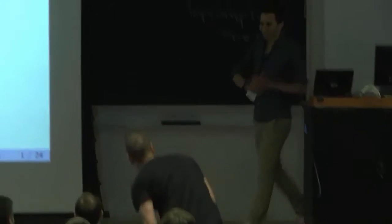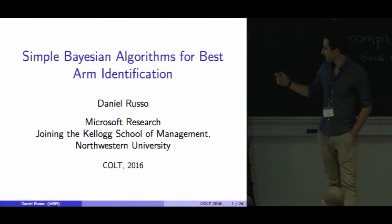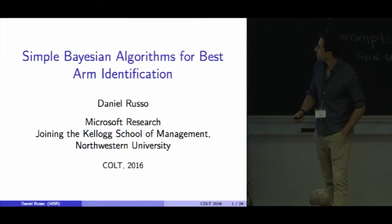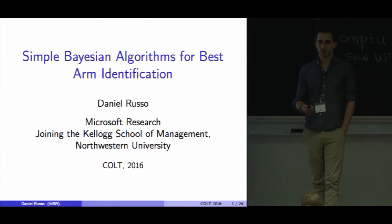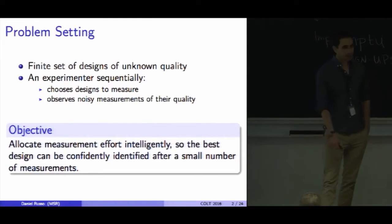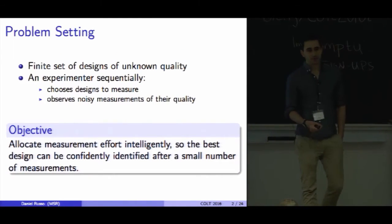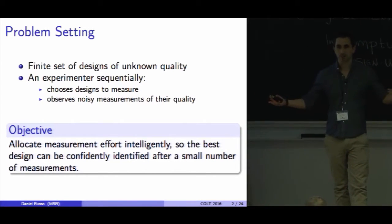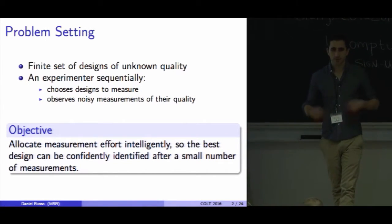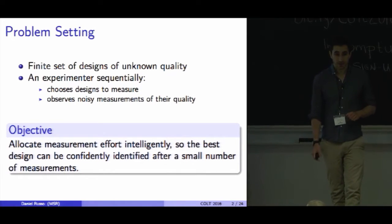Thanks. It's an honor to kick off COLT. I'm going to be talking about some simple Bayesian algorithms for the best arm identification problem. At a high level, we're facing the following problem: we have this finite set of designs or options, and we don't know the quality of these designs a priori, so we're going to experiment to try to figure out which one is best.